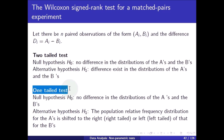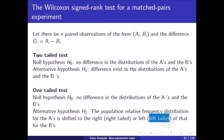In a one-tailed test, the null hypothesis is no difference in the distribution of the As and the Bs, and the alternative hypothesis is that the population relative frequency distribution for the As is shifted to the right (for right-tailed) or left (for left-tailed) of that for the Bs.